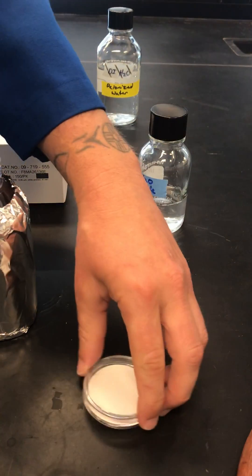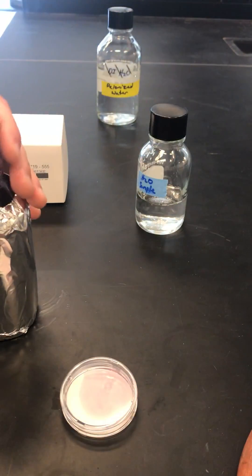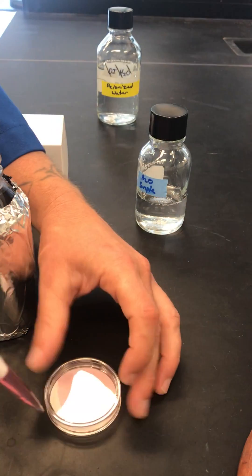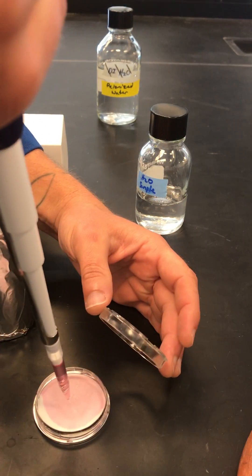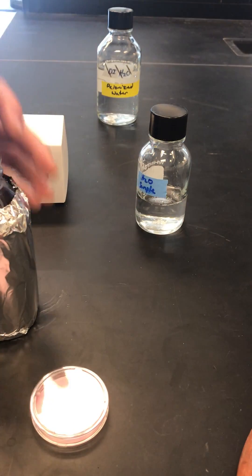Endo broth is selective against gram negatives or gram positives and differential for coliforms and their ability to ferment lactose, so it's very similar to EMB agar. You can find the recipe in the appendix of your lab manual.